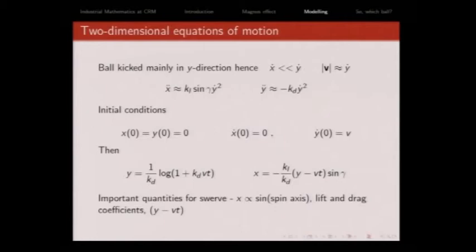I do something very approximate. I say, the ball's kicked mainly in the y direction, so the x velocity must be a lot less than the y velocity. So I'm going to neglect the x velocity. Then the size of the velocity vector is basically just the velocity in the y direction. I neglect this x dot everywhere, and I get a nice simple system. I can solve this system. I can integrate this straight away.